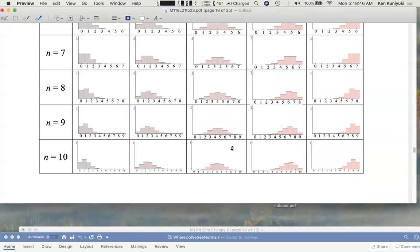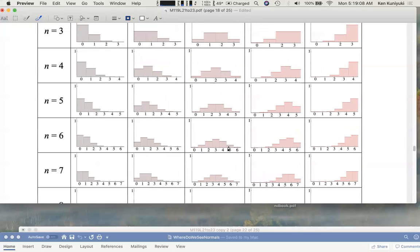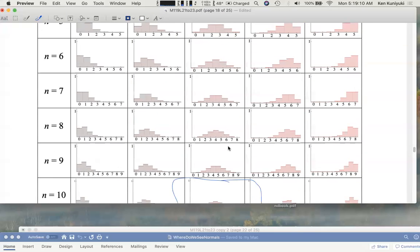If you guessed this one, ding, ding, ding, speaking of bells, you'd be correct. And what is this distribution? This is the binomial histogram, the binomial distribution, where n equals 10. So you flip a coin 10 times, and it's a fair coin. P equals one half. P equals one half, n equals 10.